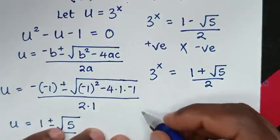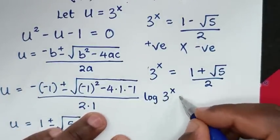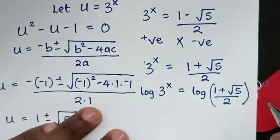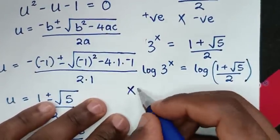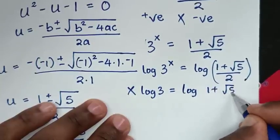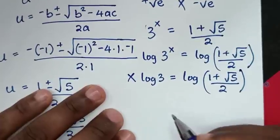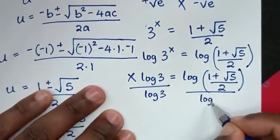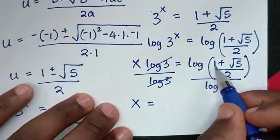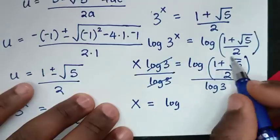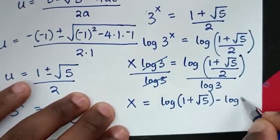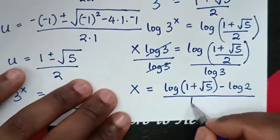We apply log on both sides: log of 3 power of x equals log of (1 plus square root of 5) over 2. The power of x moves down so it becomes x times log of 3 equals log of (1 plus square root of 5) over 2. Dividing both sides by log of 3, we get x equals log(1 plus square root of 5) minus log(2), all over log of 3.